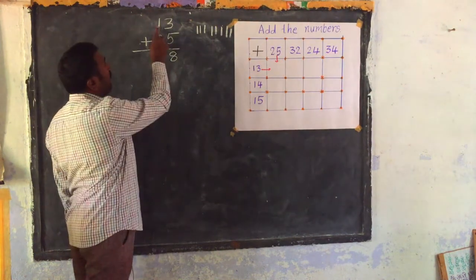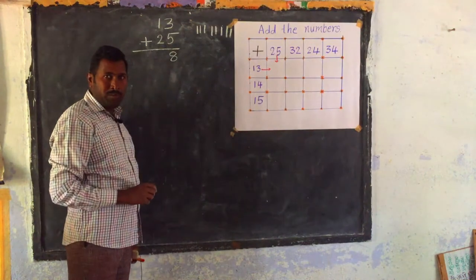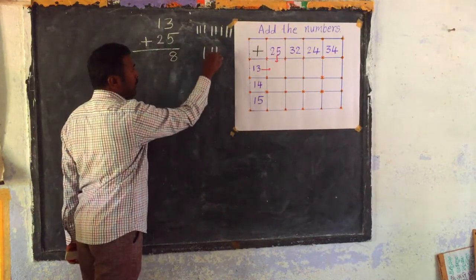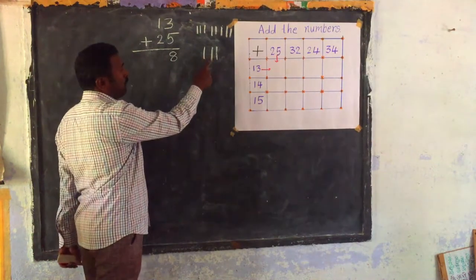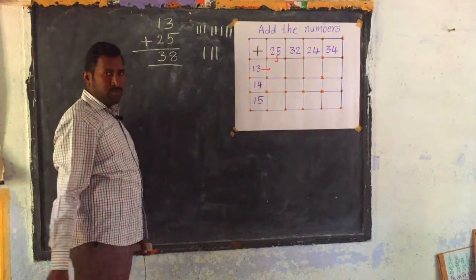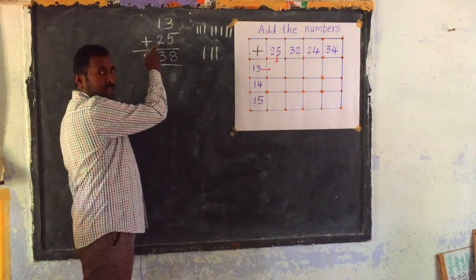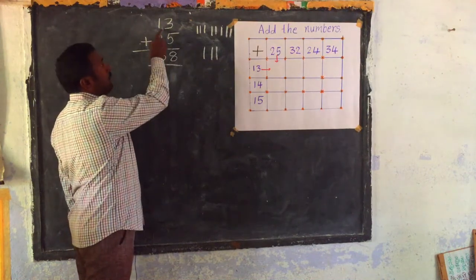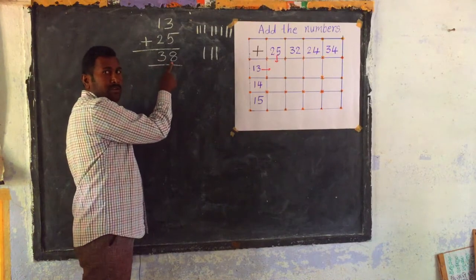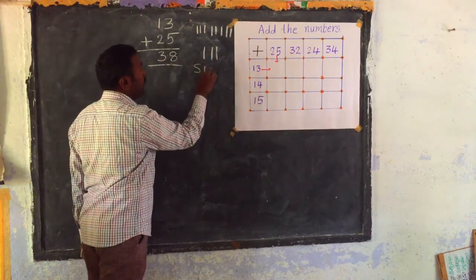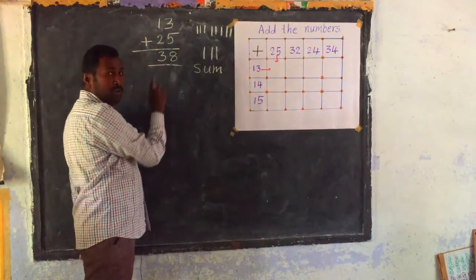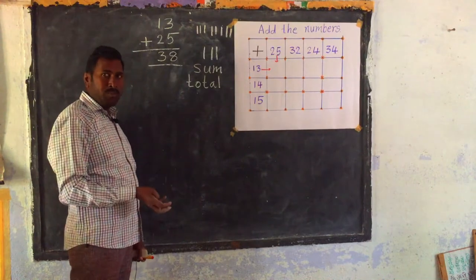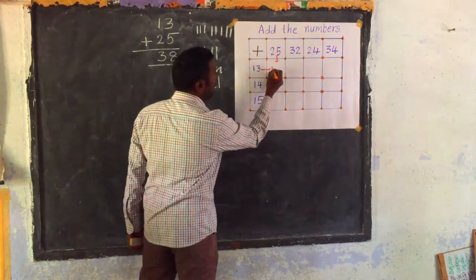Next, you have to add 1 and 2. How much do we get? 1, 2, 3. We get 38. If we add 13 and 25, the total is 38. This is also known as sum. The sum of 13 and 25 is 38. It is known as sum, also called total. Here you have to write 38.